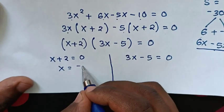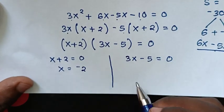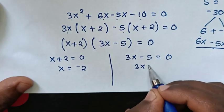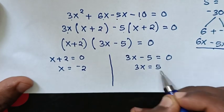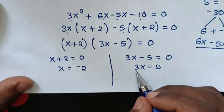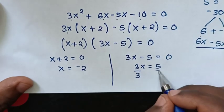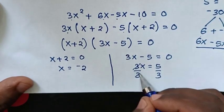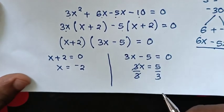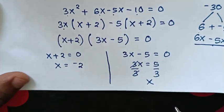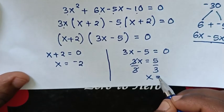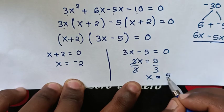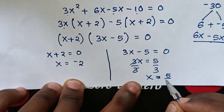So x is equal to negative 2. And from 3x minus 5 equals 0, we take negative 5 to the right side, so 3x is equal to 5. Then we divide by 3 on both sides, so 3 and 3 will cancel. Therefore x is equal to 5 over 3.